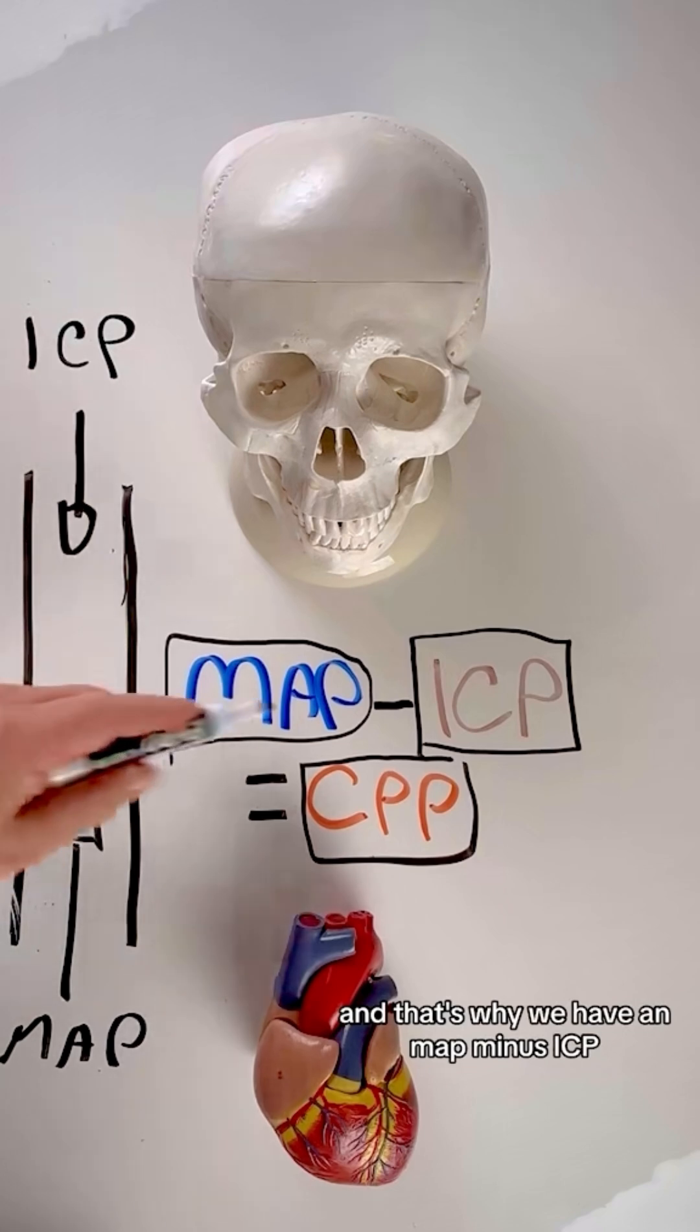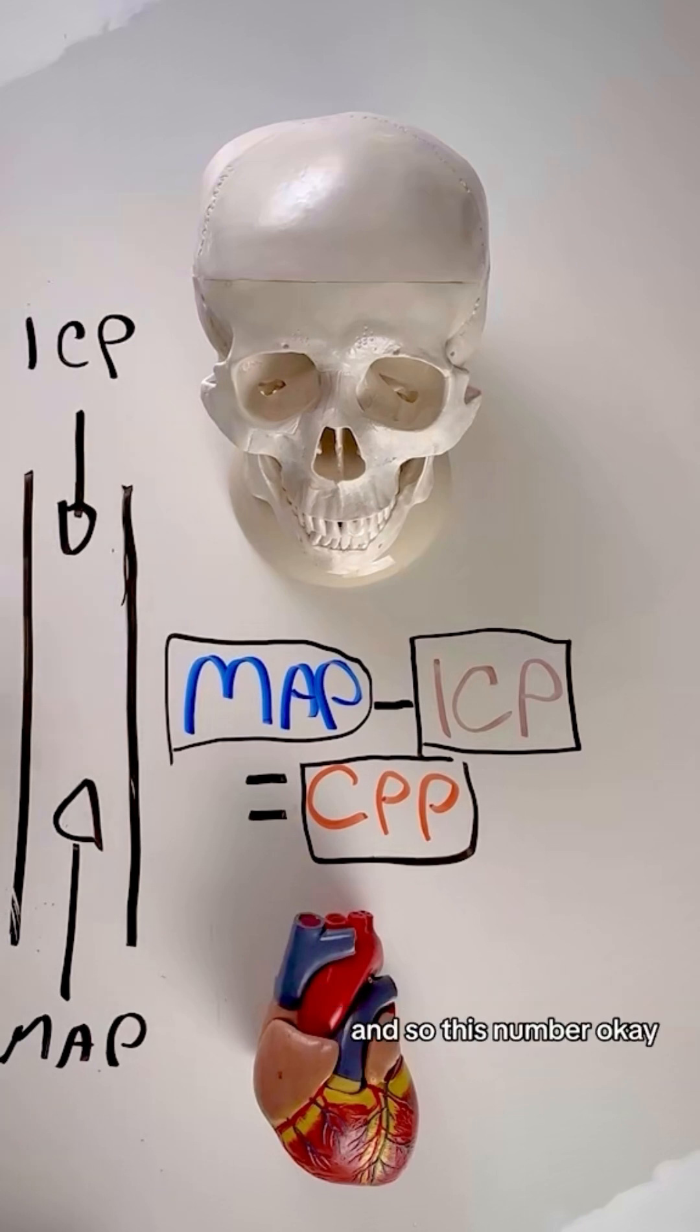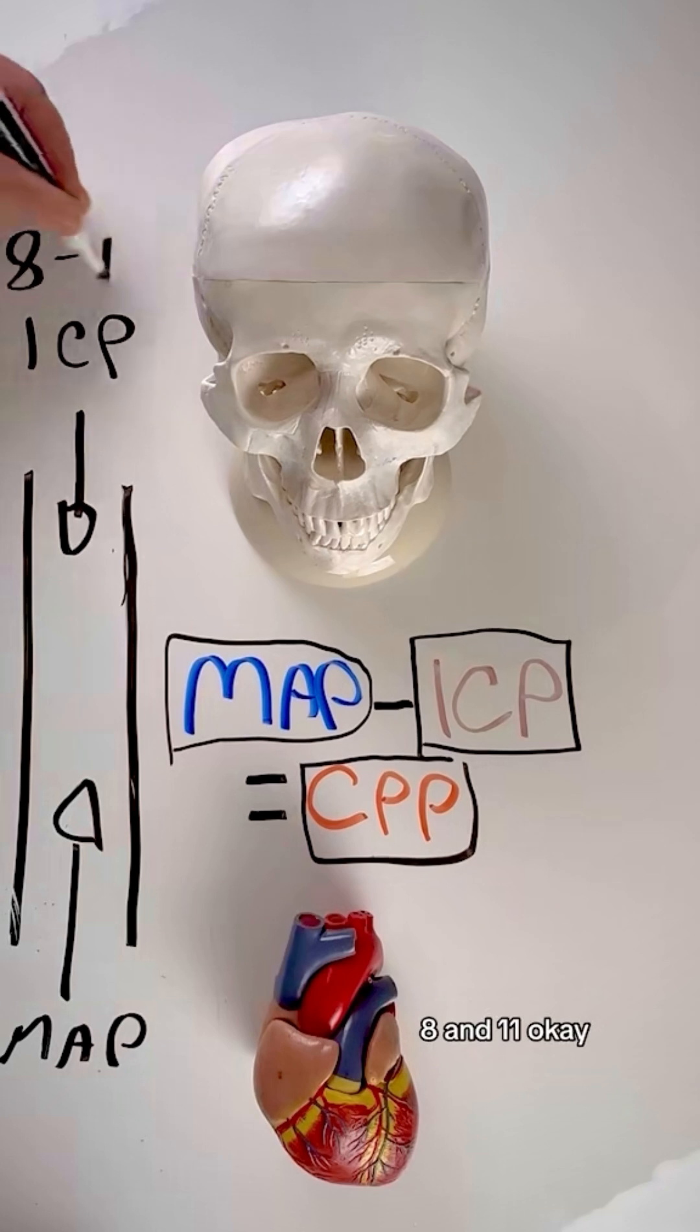And that's why we have MAP minus ICP, because that will give you your cerebral perfusion pressure. And so this number, ICP, sits anywhere between 8 and 11.